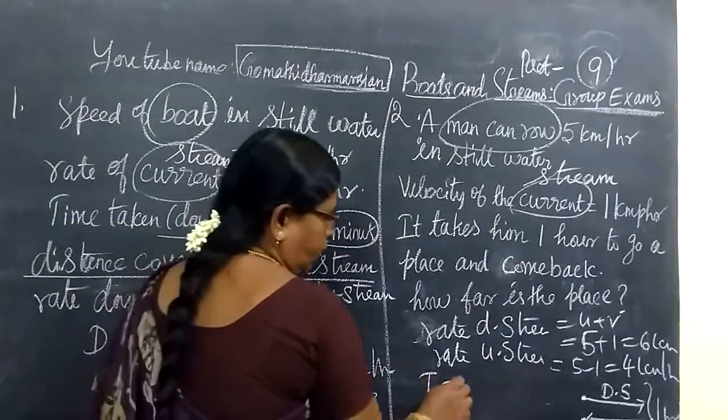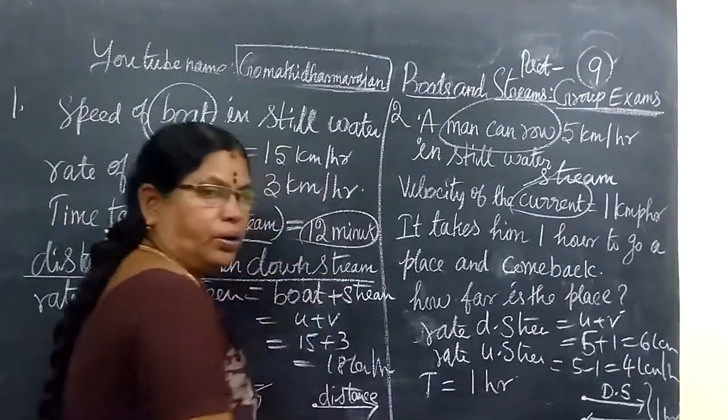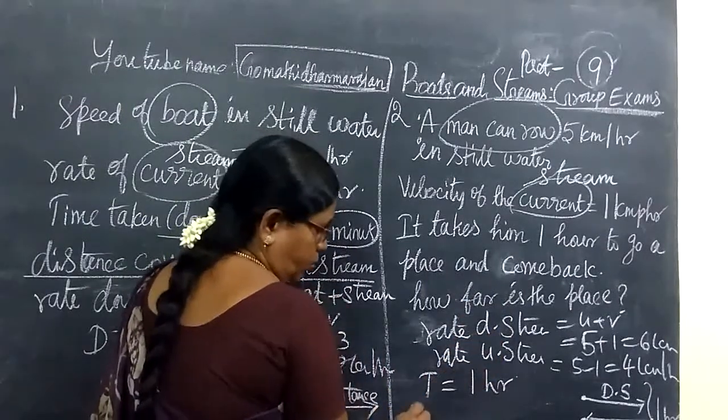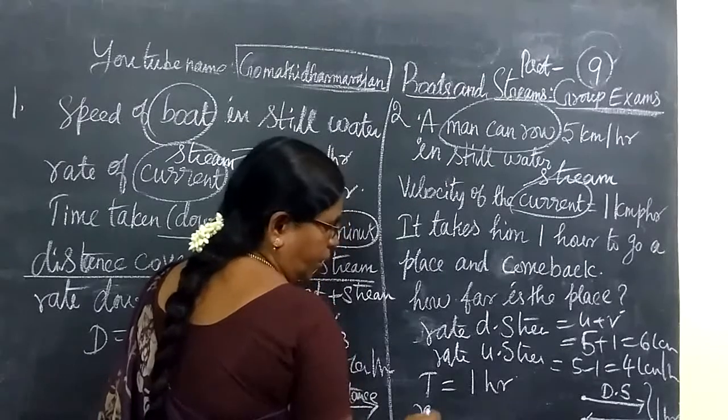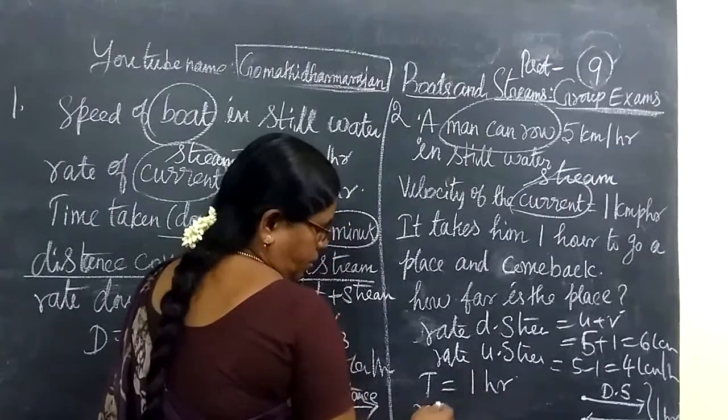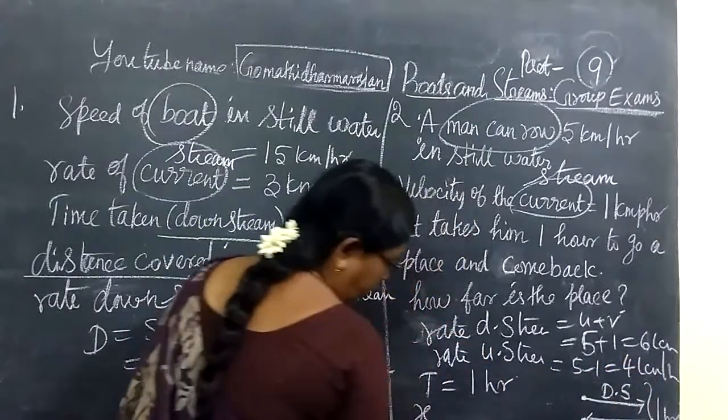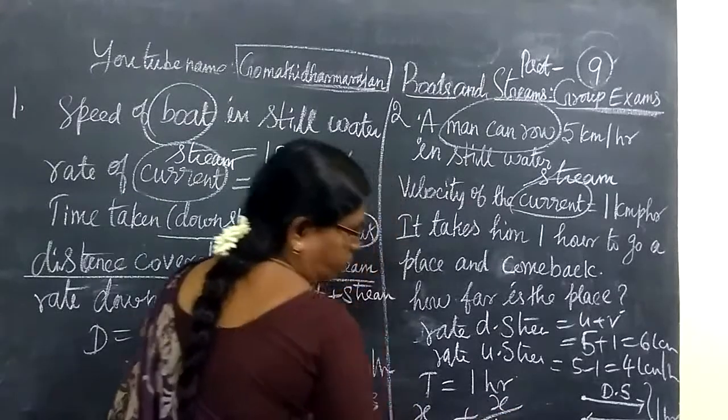So T equals 1 hour. Time equals distance by speed. Distance is what you want to find. Keep the distance as x km. So x by speed, distance by speed, for upstream 6 km, then for downstream 4 km.